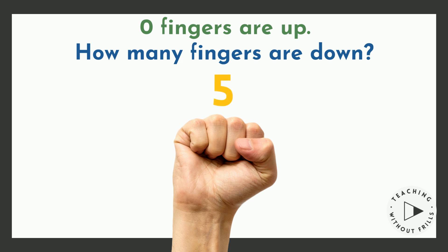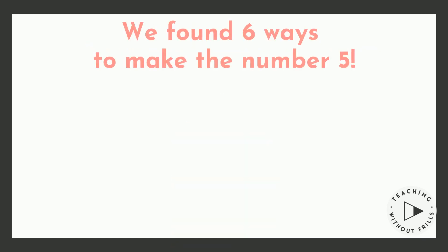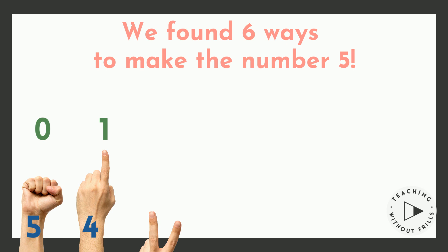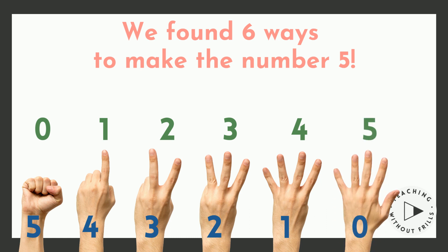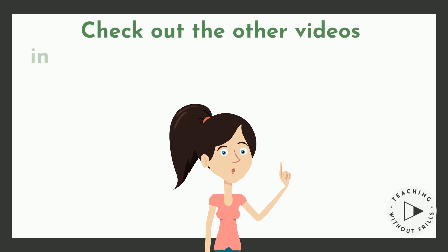Great work! Wow, we found six ways to make the number five: zero and five, one and four, two and three, three and two, four and one, and five and zero. Check out the other videos in this series to learn more strategies for making the number five.